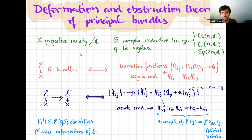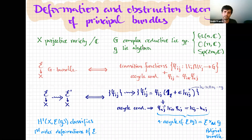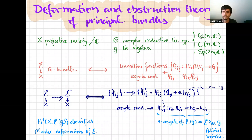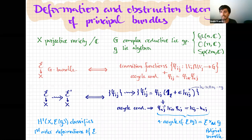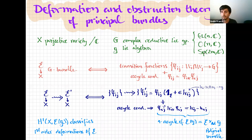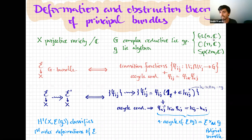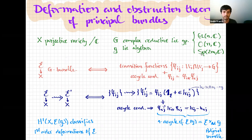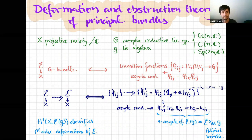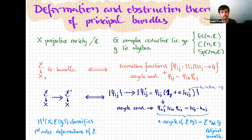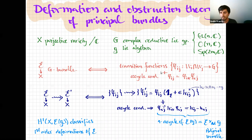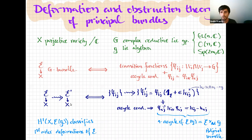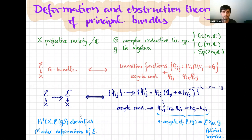If we have a projective variety and a complex reductive algebraic group — and in this talk I will be thinking about GL(n,C), O(n,C), and Sp(2m,C), so the general linear group, the orthogonal group, and the symplectic group — if we have a G-bundle E over X, this G-bundle is given by the associated transition functions. We have a clear, intuitive notion of what is a first order deformation of this G-bundle.